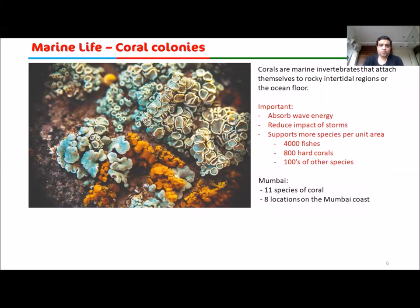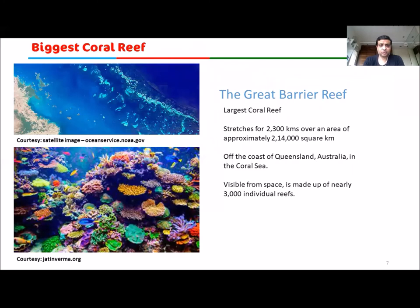Mumbai has 11 species of coral spread over eight locations across the city — areas like Haji Ali and other coastal zones. You should find out which types of corals exist in Mumbai. They were very good at some point, but due to pollution, many may have died and a lot of damage would have already happened.